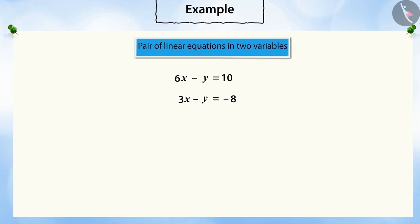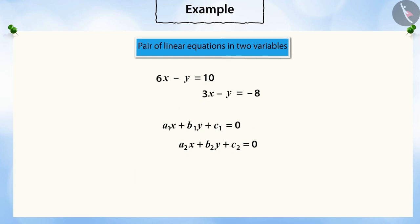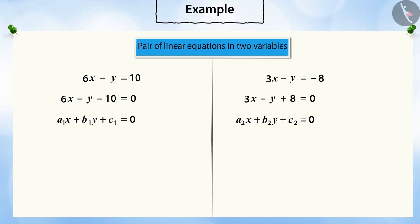Thus, we get a pair of two linear equations in two variables. The first: six X minus Y equals ten. And the second: three X minus Y equals negative eight. Comparing these to the standard form, we have a₁ = 6, b₁ = −1, c₁ = −10, and a₂ = 3, b₂ = −1, c₂ = 8.